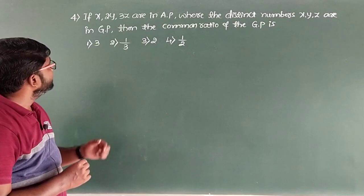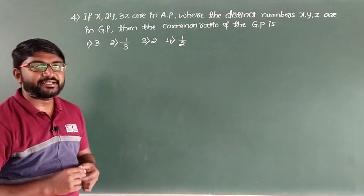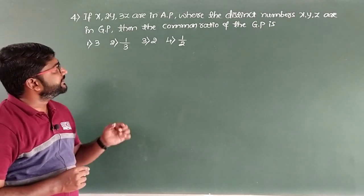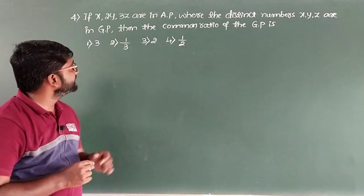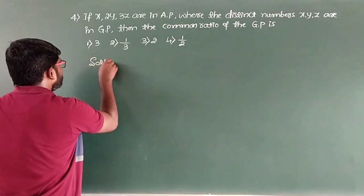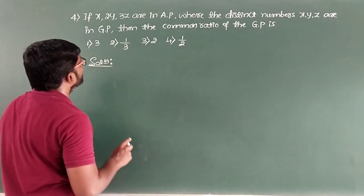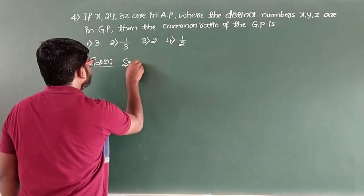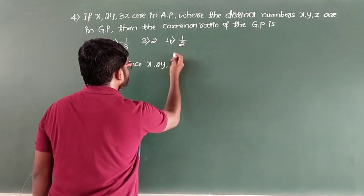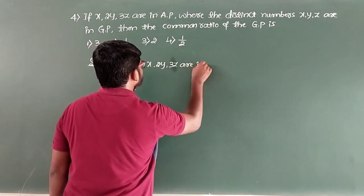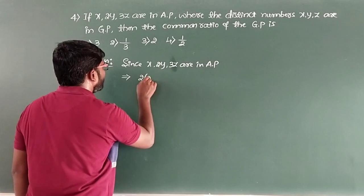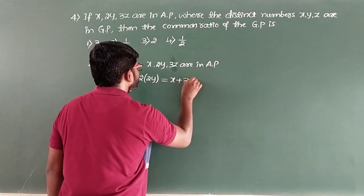The next question: if x, 2y, 3z are in AP (arithmetic progression) where the distinct numbers x, y, z are in GP, then the common ratio of the geometric progression is — options: 3, 1/3, 2, 1/2. Since x, 2y, 3z are in AP, 2×(2y) = x + 3z, giving 4y = x + 3z.